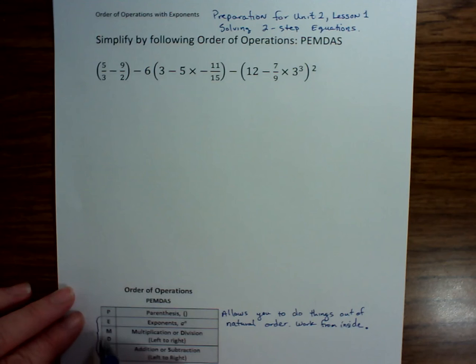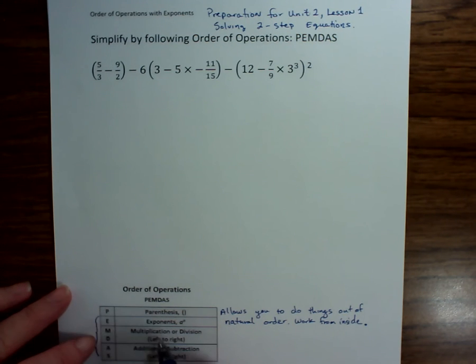These right here, exponents, multiply, divide, add and subtract, these are a natural order in which we do things. We have grouped multiplication as exponents, grouped addition as multiplying, and then we have add and subtract.